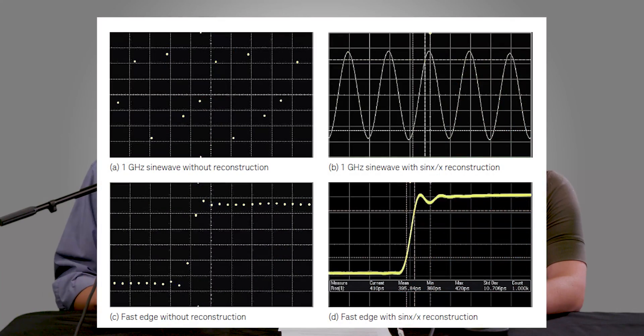So both oscilloscopes and digitizers have a specified sample rate and they just go through and sample it. But with an oscilloscope, you get Sinex over X reconstruction built in to the hardware. Whereas a digitizer, you probably will have to do some of that reconstruction on the back end. So if you look at the screenshot we pop up, there's going to be on the left side, there's just the points that were plotted. On the right, we have the interpolation.